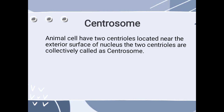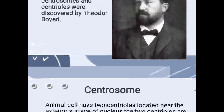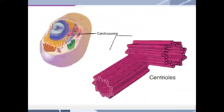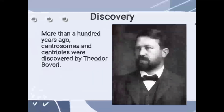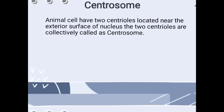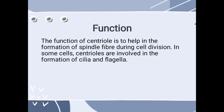These two centrioles are collectively called a centrosome. Here you can see that there are two pairs of centrioles that are present exterior to the nuclear envelope, and these both centrioles are collectively called centrosome.